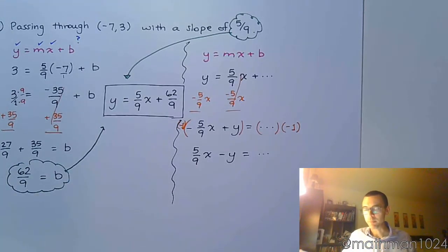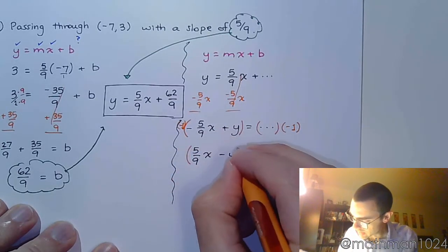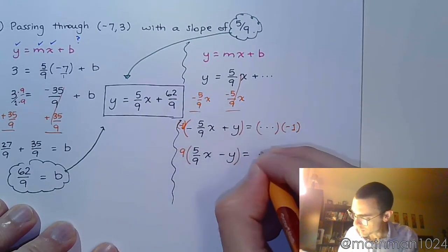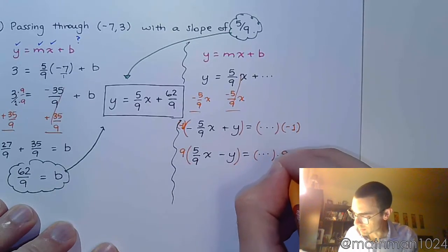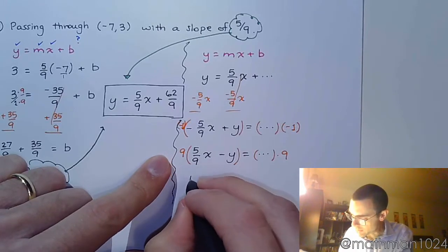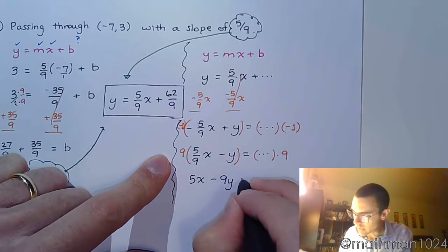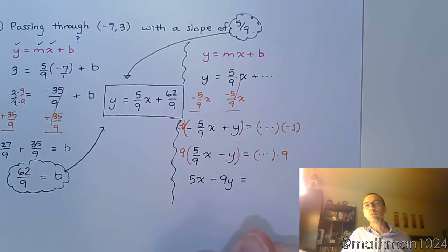Right? Again, don't care. Let's clear away those fractions by multiplying everything times that common denominator, which is 9. So you'd multiply 9 on both sides of the equation like this. Clearing this away, you would have 5x minus 9y equals, now that's going to be 9 times something, but again, since we don't know what that something is, we don't know what that number is on the right side.